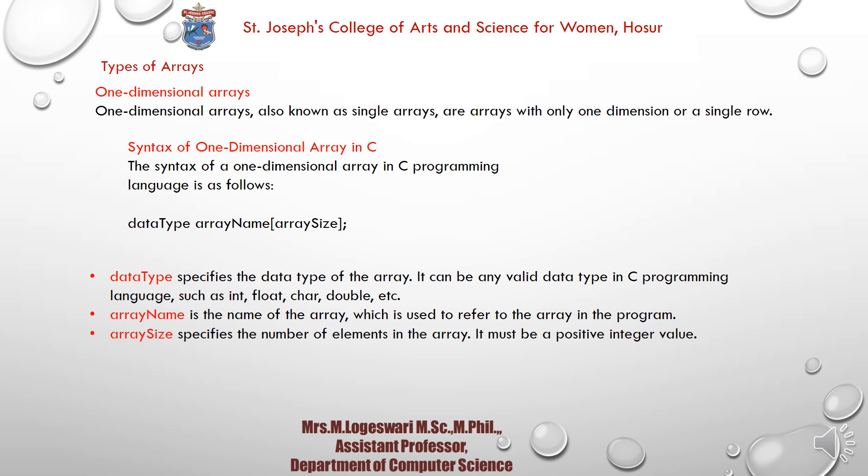Next, the types of array. The first one is the one-dimensional array. A one-dimensional array has only one dimension — a single row. The syntax for a one-dimensional array is: data type, array name, array size. The data type specifies the type of the array, the array name is any name given to the array, and the array size specifies the number of elements. It must be a positive integer only.